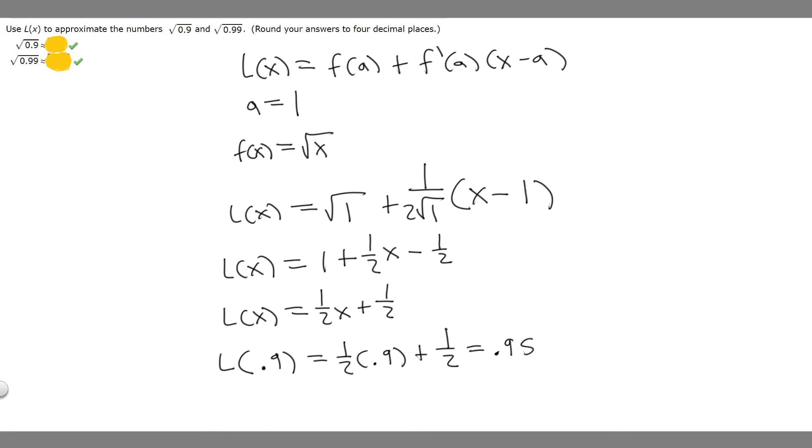So the first one is 0.95. Now the second one: L(0.99) = ½(0.99) + ½. ½ times 0.99 is 0.495, then plus ½ gives us 0.995. So this is the answer to the second one. These are going to be our answers to this problem.